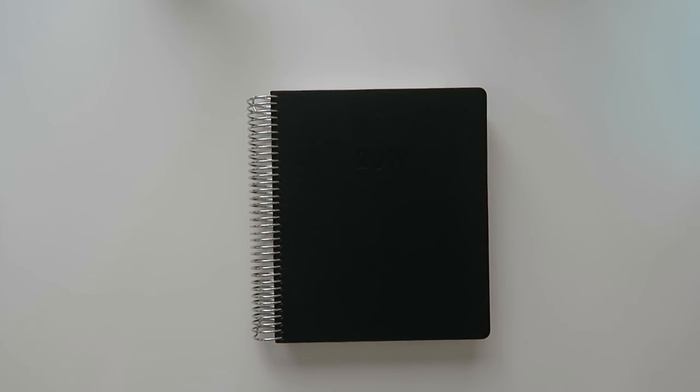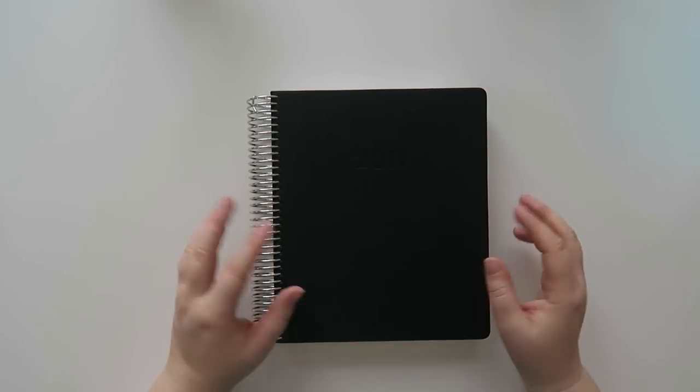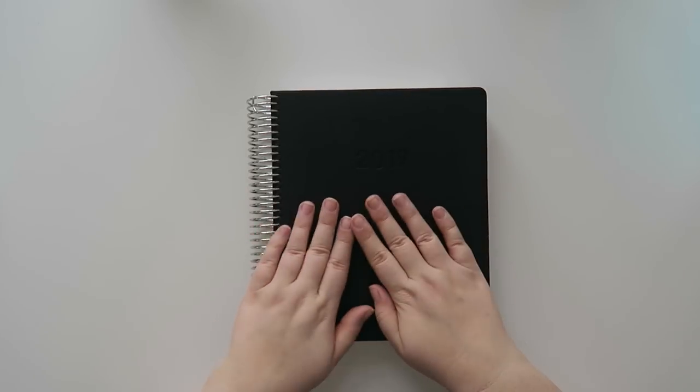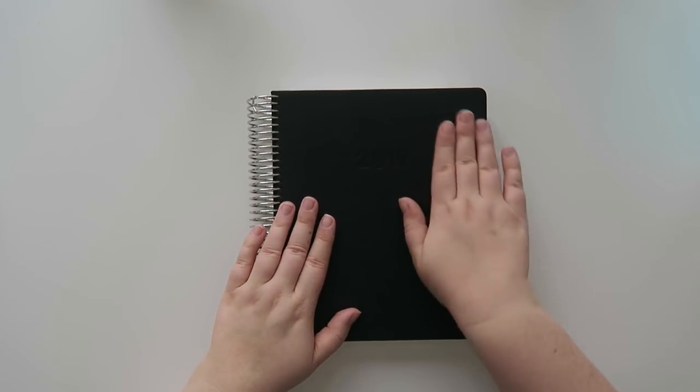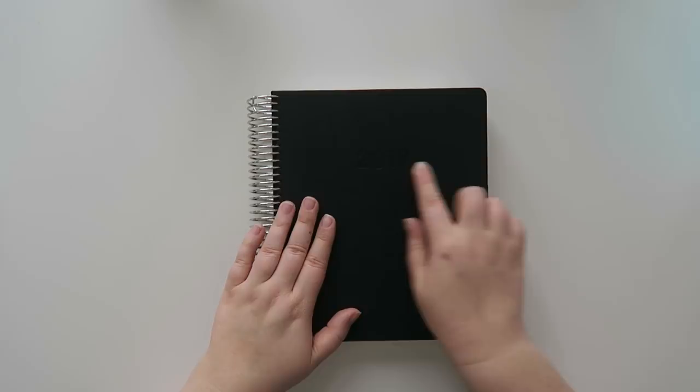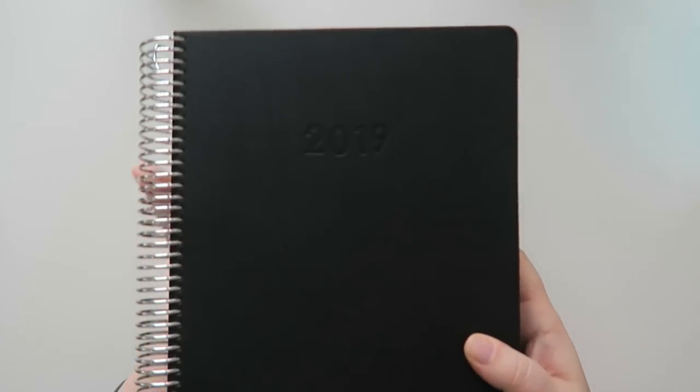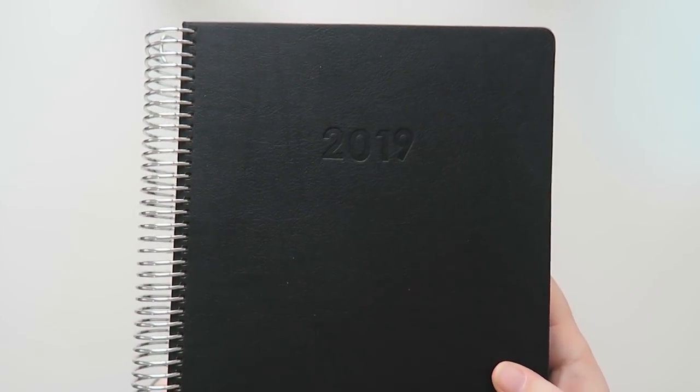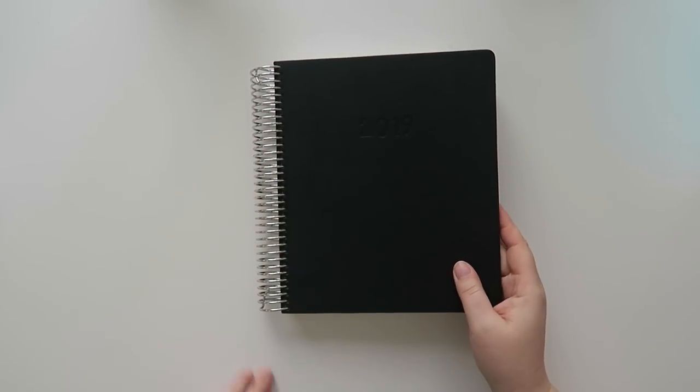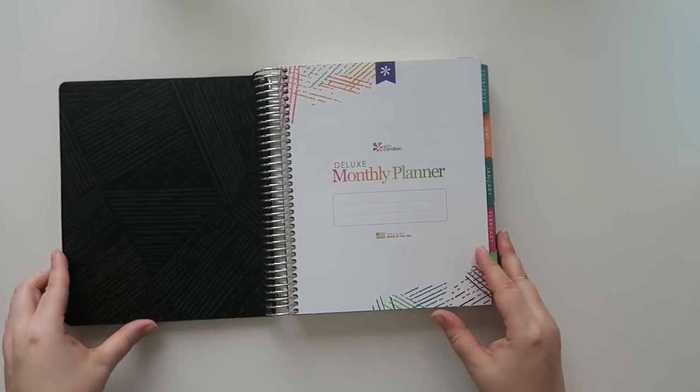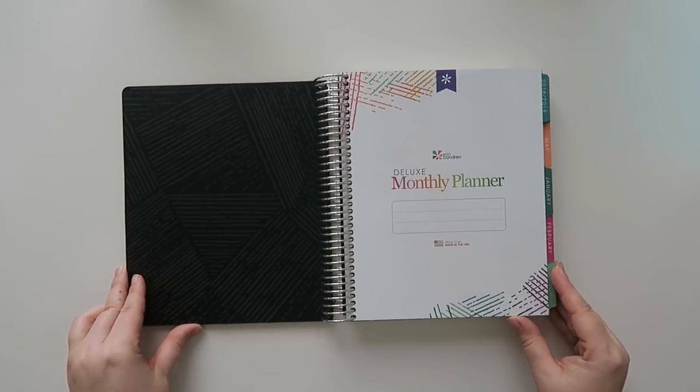Well hello my friends and welcome back to my channel. Today is the first budget for 2019. I don't even think I've shown the planner that I'm going to be using. This is a hardcover Erin Condren planner and it has embossed 2019. I don't know if you can see it. My viewfinder is kind of funky, but it's the black cover with the platinum coil and it is the deluxe monthly planner.